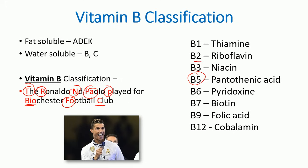So you go: thiamine, riboflavin, niacin, pantothenic acid, pyridoxin, biotin, folic acid, cobalamin. Remember: 'Bio' stands for biotin at B7, and after that we only have B9 and B12. Before that we have B6, B5, then B3, B2, and B1. That's how easy it is to remember all the vitamin B names with their respective chemical names.